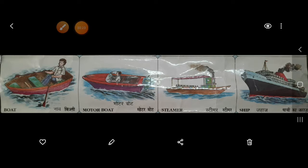In a boat, how many people can sit? Maximum one or two. Motor boat — how many people can sit? Two, maximum one or two. Steamer — many people can sit. And ship — usme toh aur bhi log baithte hain, many people can sit in the ship. So what is common in water transport? They run in water.